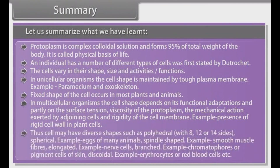Thus, cells may have diverse shapes such as polyhedral with 8, 12, or 14 faces; spherical — for example, eggs of many animals; spindle-shaped — for example, smooth muscle fibers; elongated — for example, nerve cells; branched — for example, chromatophores or pigment cells of skin; and discoidal — for example, erythrocytes or red blood cells.